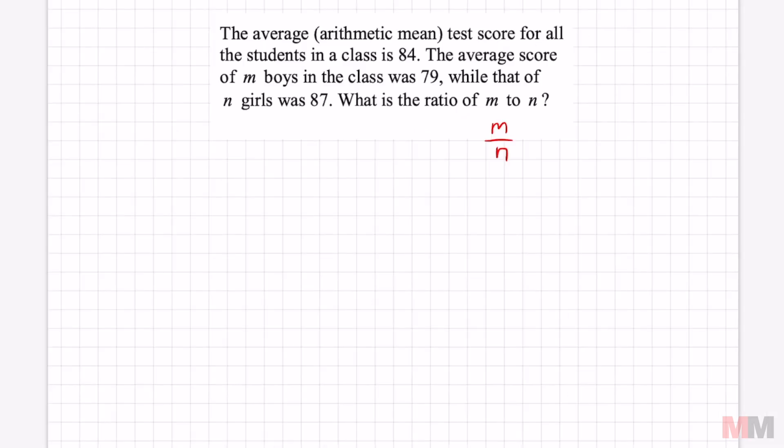Starting from the beginning, the average test score for all the students in the class is 84. This kind of starts backwards. We're given the average right away. And how do we get the average test scores? It's going to say it on the second sentence.